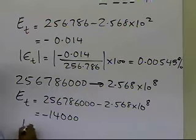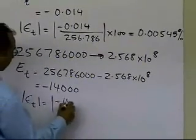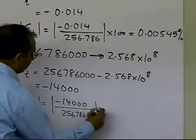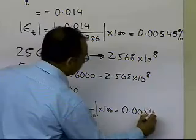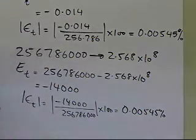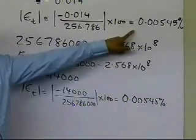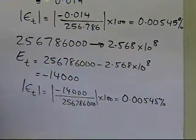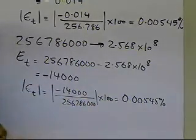But if you look at the relative true error for this large number, it's minus 14,000 divided by 256,786,000 times 100, and this value turns out to be 0.0054 percent. So what you're finding is that even for large numbers, the relative true error is of the same order as for the smaller number. The reason this comes out exactly the same is the specific example I chose — for a different number of similar magnitude it would differ slightly, but it will be of the same order.